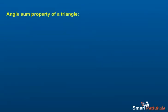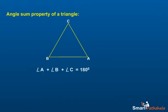Angle sum property of a triangle: The sum of the angles of a triangle is 180 degrees, or two right angles. As a consequence of this result, we can say that: 1. A triangle cannot have more than one right angle. 2. A triangle cannot have more than one obtuse angle. 3. In a right triangle, the sum of the two acute angles is 90 degrees.